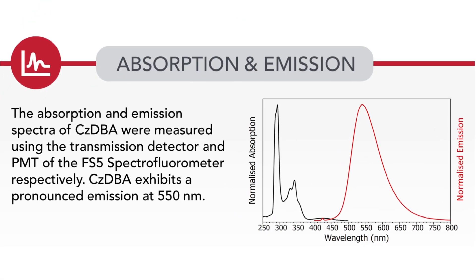The first step was characterizing the absorption and emission spectra of the material in the solvent toluene. Absorption was measured with a transmission detector included as standard in the FS5. The photoluminescence spectrum, shown in red, was acquired with the PMT detector. CZDBA shows a broad spectrum peaking at 550 nm, so it would be used as a material for green pixels in OLED displays.